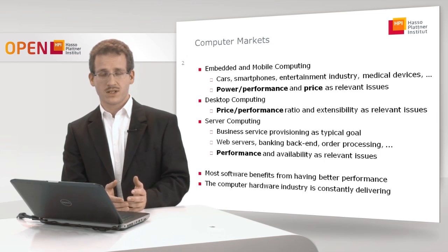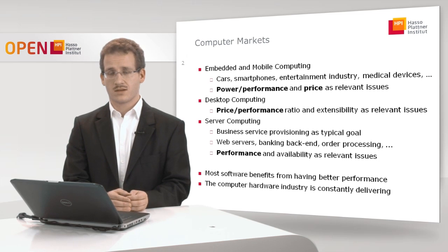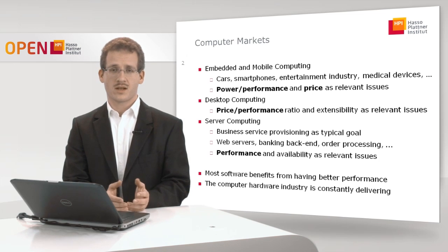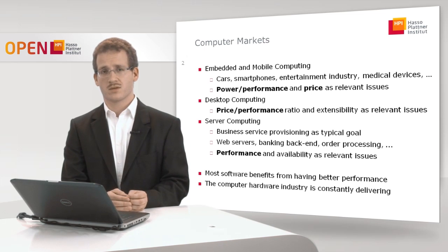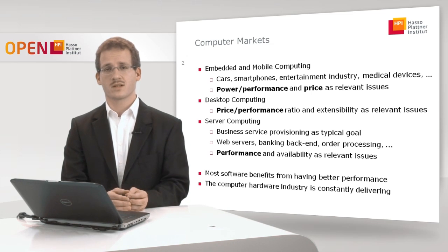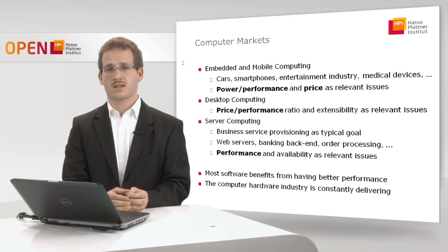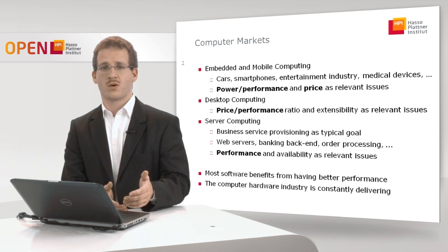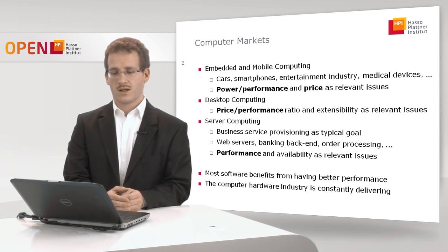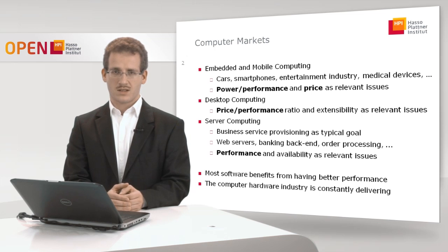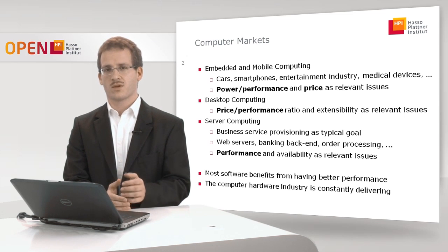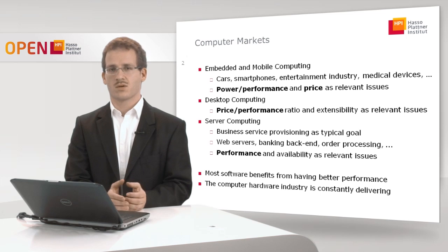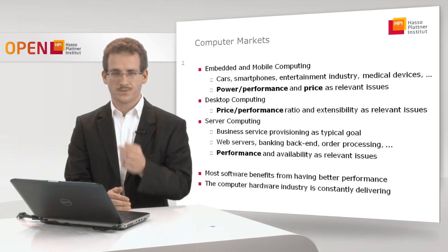The second big class of computer market is desktop computing, a classical area which relates to desktop PCs and home PCs but also workstations, where the most relevant aspect is the price per performance. The idea here is that you get the best possible performance for the lowest price — this is what an ordinary end customer is interested in.